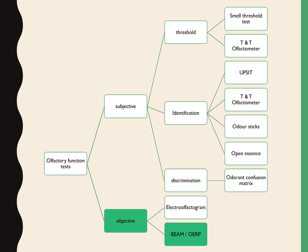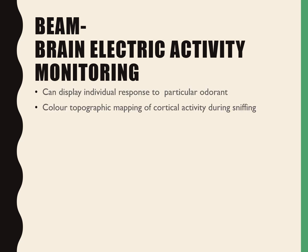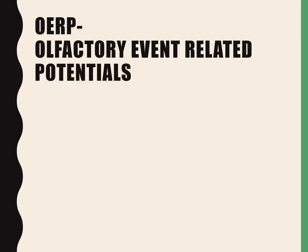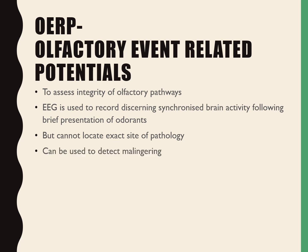The next is the BEAM test, which is also an objective test — Brain Electric Activity Monitoring. It can display individual responses to a particular odorant, and color topographic mapping of cortical activity during sniffing is recorded. A similar test is the olfactory event related potential, or OERP, which helps to assess the integrity of olfactory pathways. EEG is used to record synchronized brain activity following brief presentation of odorants, but it cannot locate the exact site of pathology and can be used to detect malingering.